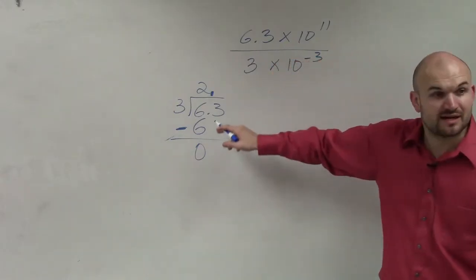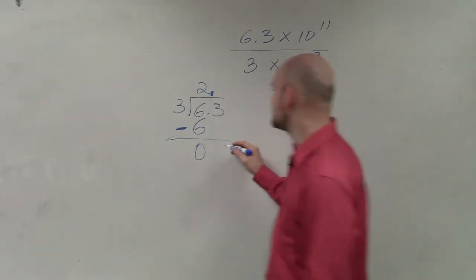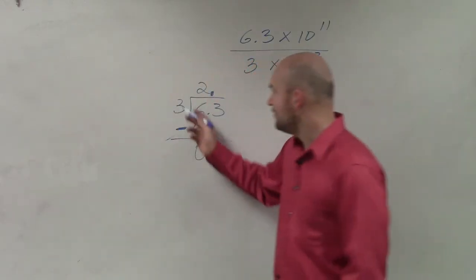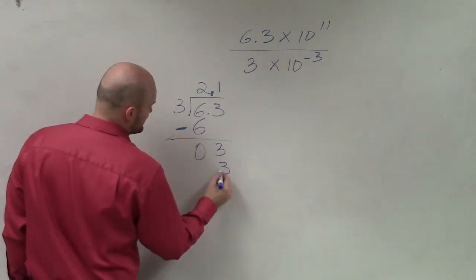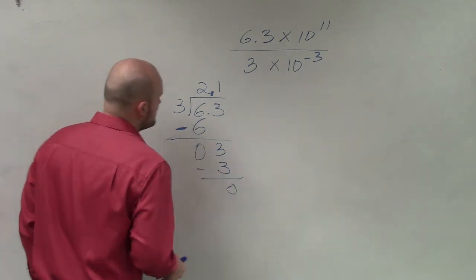But instead of always adding 0's, there actually is a number next, which is 3. 3 does go into 3 one time. 1 times 3 is 3, 0.